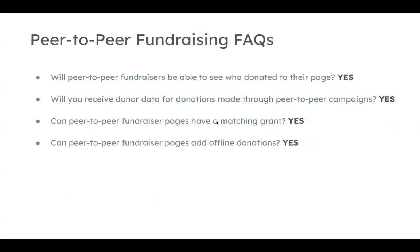A couple of high-level FAQs that come through in our support channel: Will the peer-to-peer fundraiser be able to see who donated to their page? Yes, they're going to have access to this information. Will you as the organization receive donor data for donations made through a peer-to-peer campaign? Yes — you'll have access to donor names, how much they gave, all of that within your own donation report. Can peer-to-peer fundraiser pages have a matching grant? Yes, absolutely. If a supporter wants to set up a peer-to-peer page and also set up a matching grant, they can do that. Optionally, if you set up a matching grant, you can choose to have fundraiser pages also be able to take part in that matching grant.